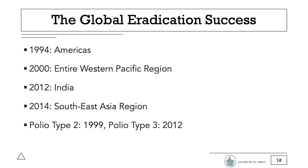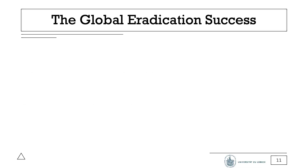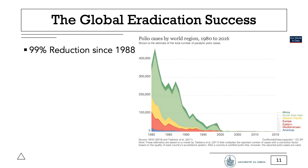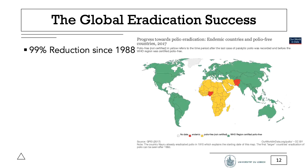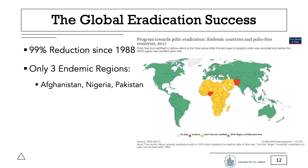Also, the last case of polio caused by serotype 2 has been recorded in 1999, and of type 3 in 2012. They were considered eradicated in 2015 and 2019 respectively. In total, 2.5 billion children have been vaccinated with OPV so far, and since 1988, worldwide cases of polio have been reduced by 99%. Today, there are only three countries left with endemic cases of polio: Afghanistan, Nigeria, and Pakistan.